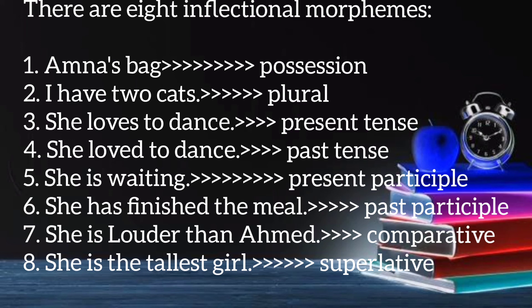Number four: past tense — the use of '-d' at the end of the word 'love' changes the present tense into past. Number five: present participle — in 'she is waiting'. Number six: past participle — in 'she has finished the meal'. Number seven: comparative — in 'she is louder than Ahmed', the use of '-er' at the end of the word. Number eight: superlative — in 'she is the tallest girl', the use of '-est' at the end of 'tall'.